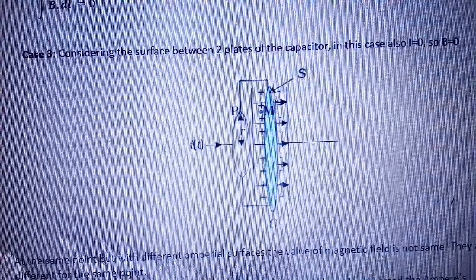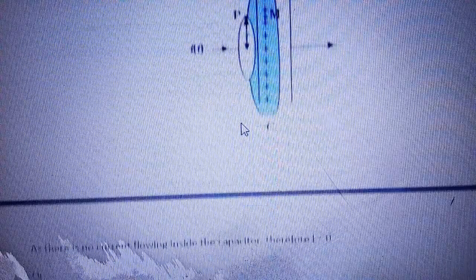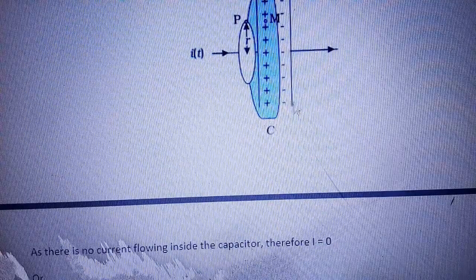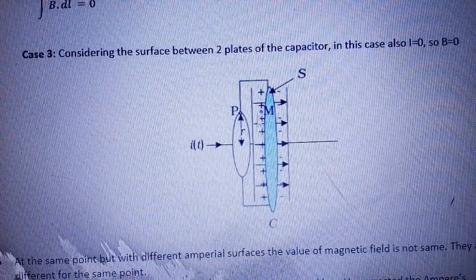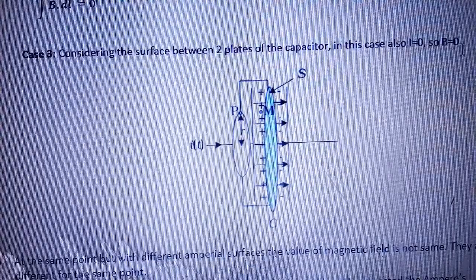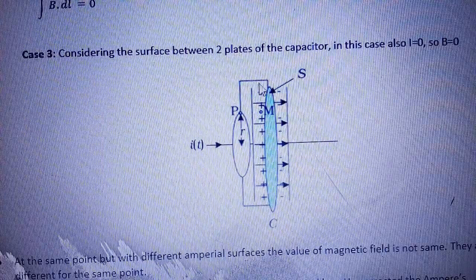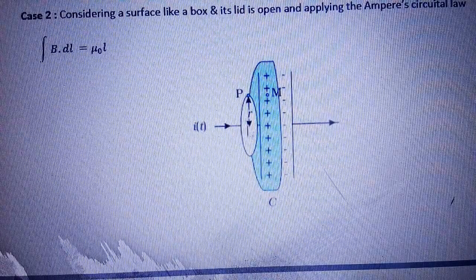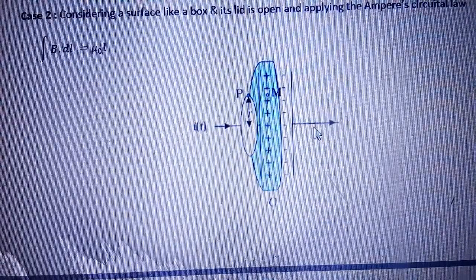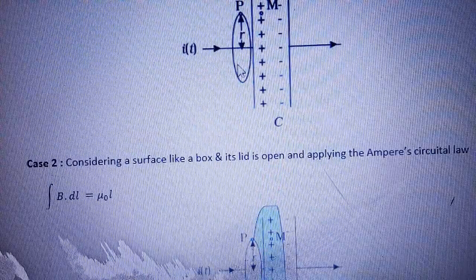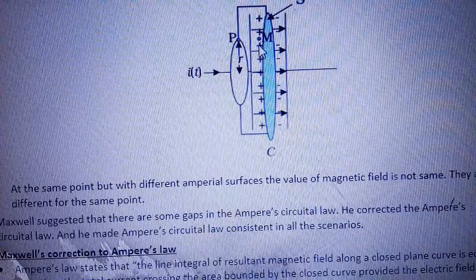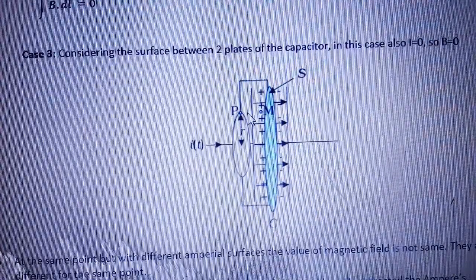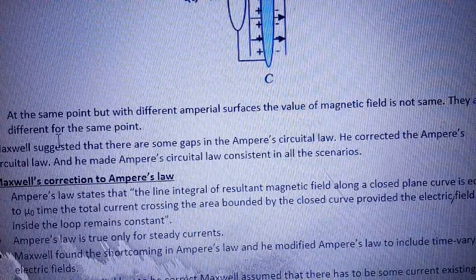Case 3: Considering the surface between the two plates of the capacitor। In this case, i is also equal to 0, क्योंकि यहाँ से circuit में current flow नहीं कर रहा है और यहीं पर stop हो गया। Current यहाँ से गया, बट यह इसी loop में रह गया, इससे बाहर नहीं आया। So again i = 0, इसलिए B की value भी यहाँ पर 0 हो जाएगी।